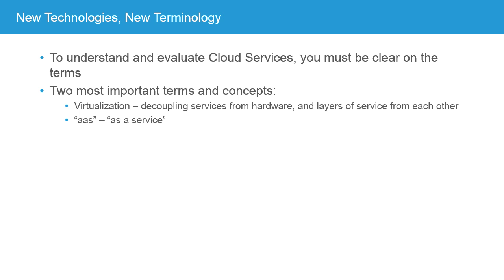There are two important terms and concepts that really underlie all of the rest. The first is the idea of virtualization — decoupling services from hardware and one layer of service from another. The other is the whole idea of 'as a service,' which is often expressed as AAS following some other letter. This idea of a service is essential to the cloud computing model — the idea that you're not buying hardware, not even really buying a contract. You're buying a service delivered to your users, whether internal or public.